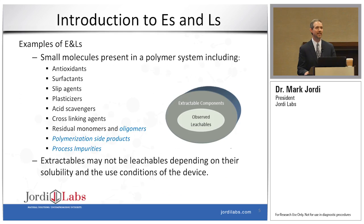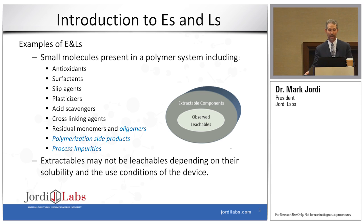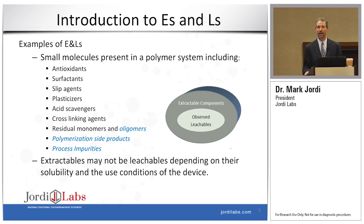Typical examples of extractables and leachables would include things like antioxidants, surfactants, slip agents, plasticizers, acid scavengers, and many other components that are common in plastic systems.